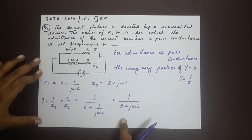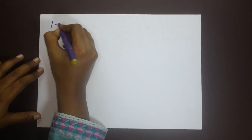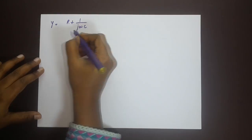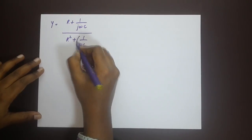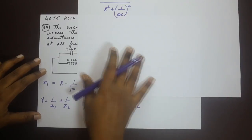Now, in order to solve this we can rationalize the denominator because we have the imaginary part j there. If we rationalize the terms we get y is equal to R plus 1 by jωc divided by R square plus 1 by ωc whole square.